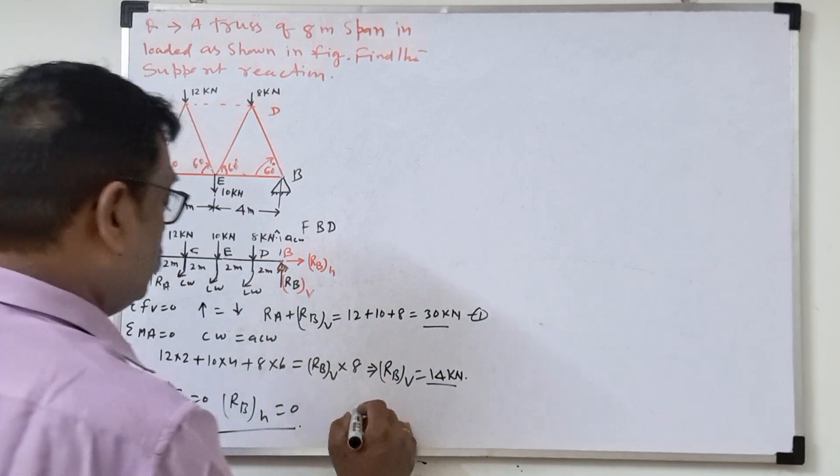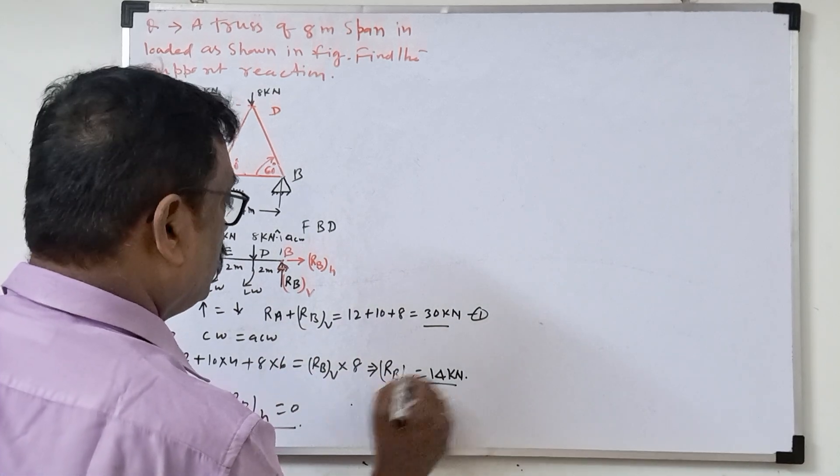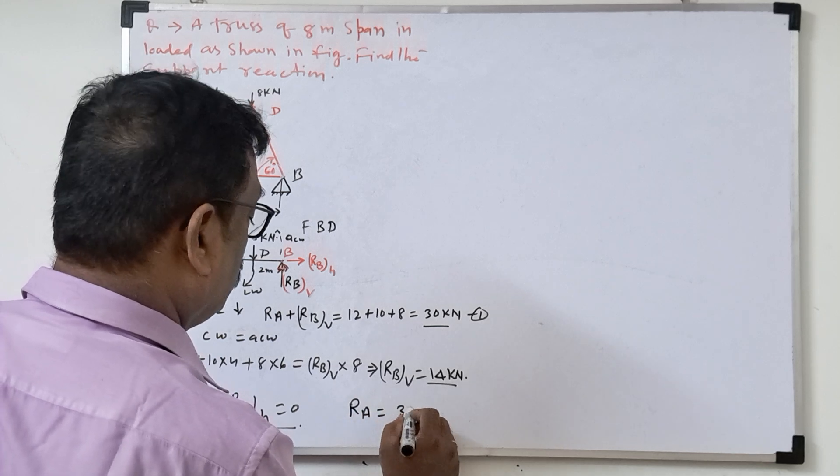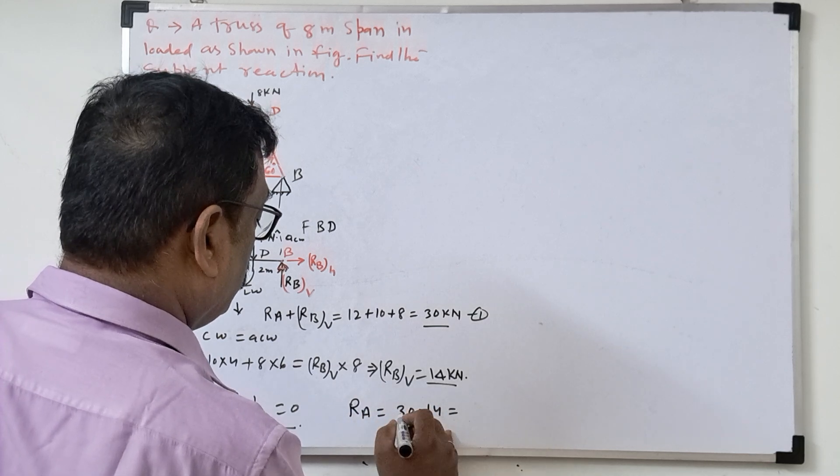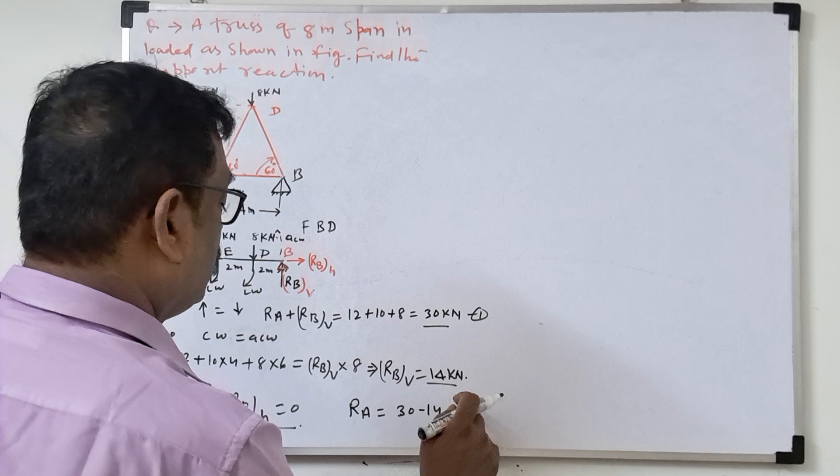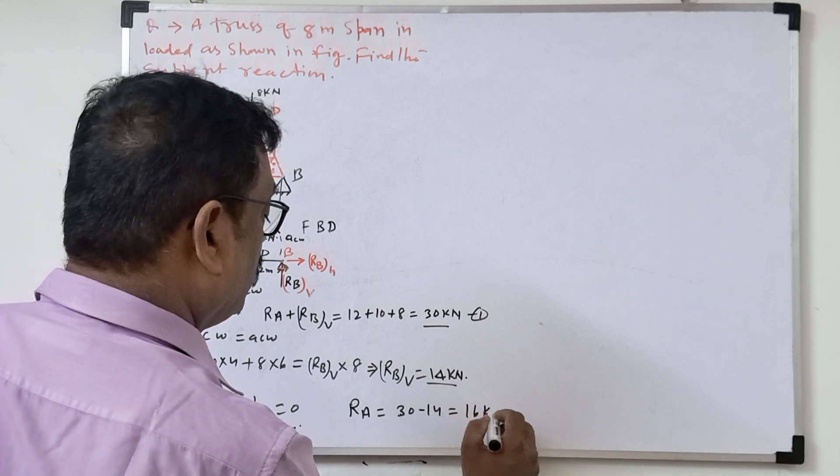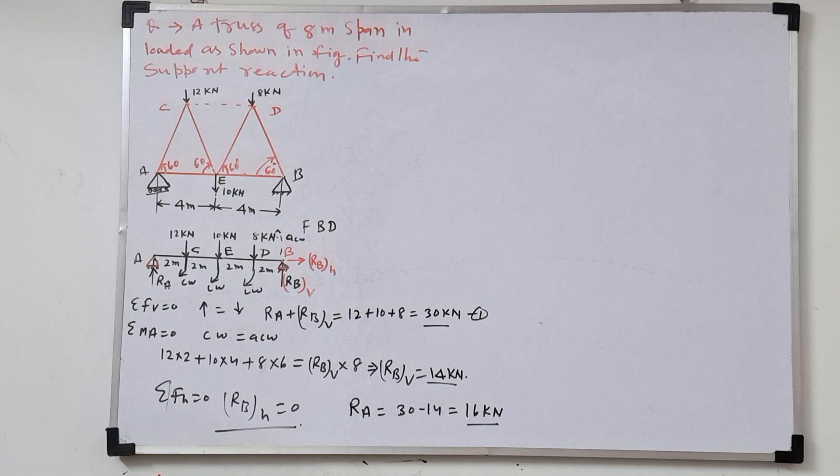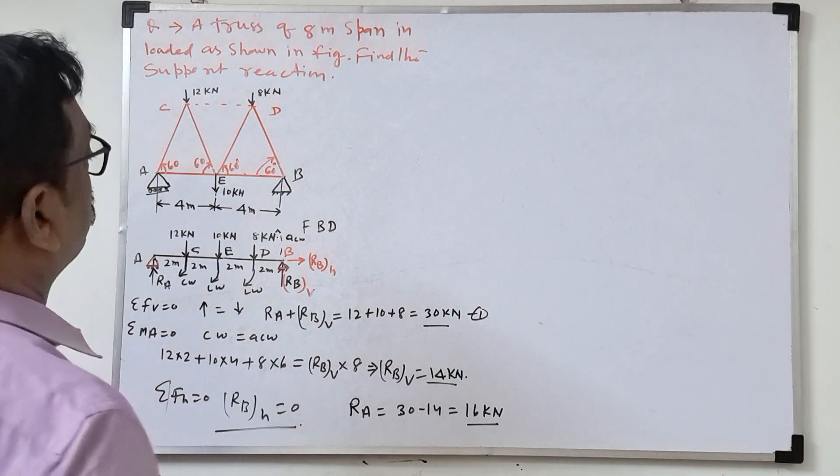RA will be there. Substitute with this equations 1. So RA is equal to 30 minus 14. Equal to how much is coming? So 16 kilonewton. So RA will be 16 kilonewton. So this way we can calculate the other reactions force.